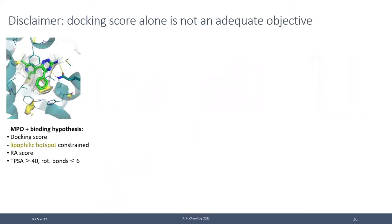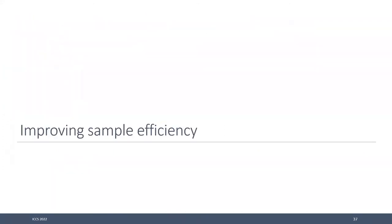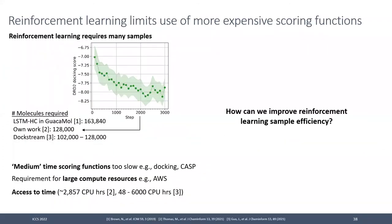Optimizing docking score alone isn't a good scoring function — you need to add more heuristics. The problem with reinforcement learning is it's slow and sample-inefficient. It takes over 100,000 molecules to optimize the objective, which is fine for quick computations like ML inference but not for docking that takes 10 to 30 seconds per molecule — requiring a lot of compute resource.